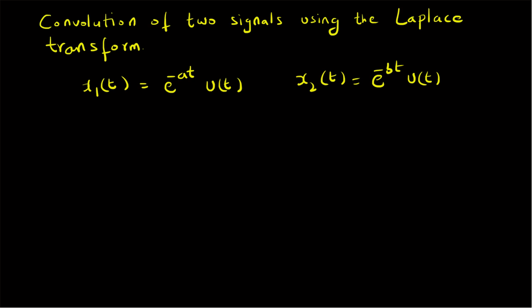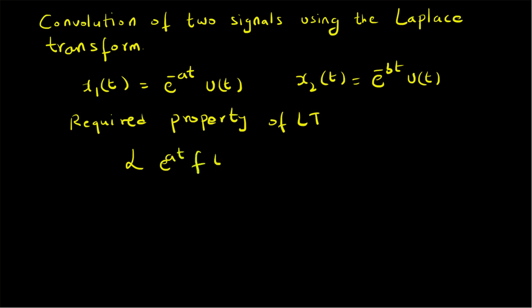To solve this problem we are going to require the following property of the Laplace transform. The required property is translation in the s-plane: the Laplace transform of e^(at) · f(t) is equal to F(s - a). So given that f(t) has a Laplace transform F(s), the Laplace transform of the product e^(at) · f(t) is F(s - a) — that is, the Laplace transform is shifted or translated by a value a.